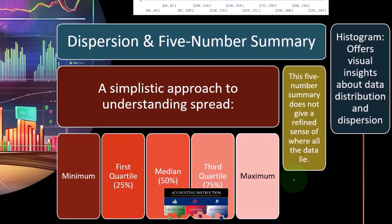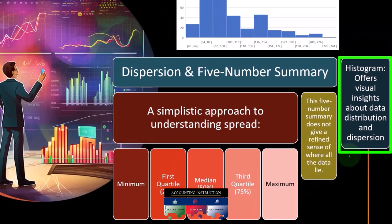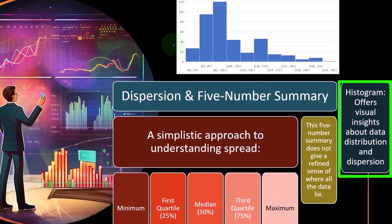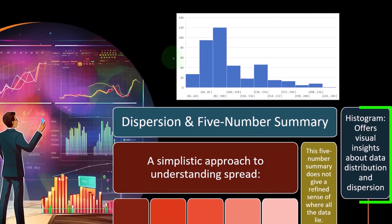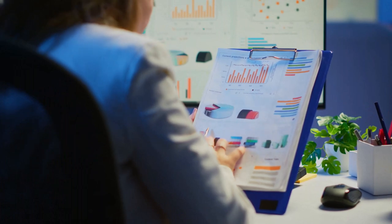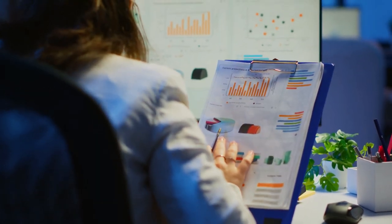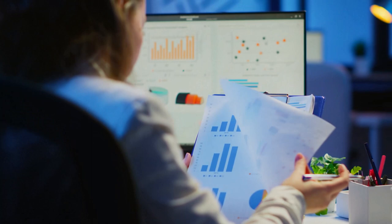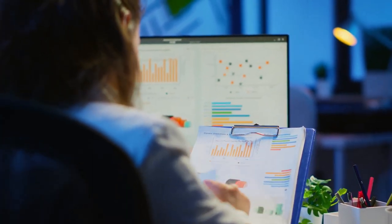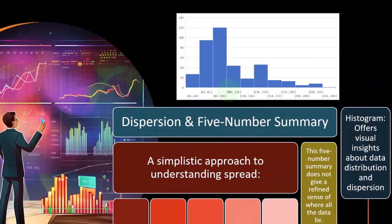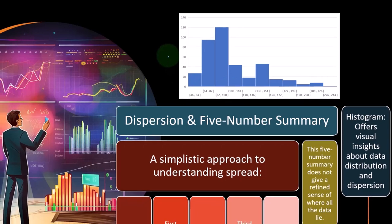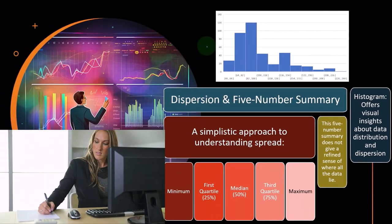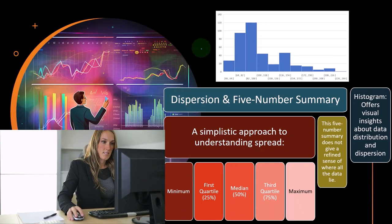The five number summary is a good tool, but we probably want more tools to understand the spread of data. The histogram does offer visual insights about data distribution and dispersion. Looking at a histogram with the five number summary and the mean as the fulcrum point gives a good intuitive sense of spread, but we'd also like a numerical representation — ultimately, the variance and standard deviation.